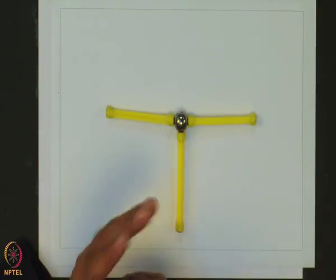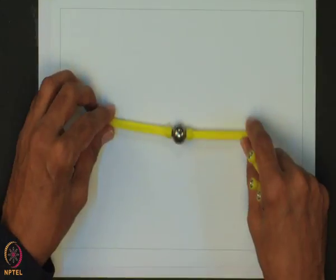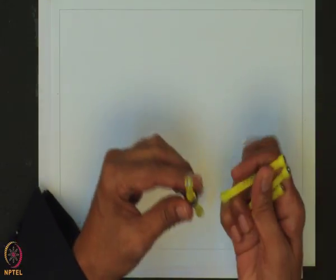Steric number 5 with 3 lone pairs and 2 bonded pairs gives a linear shape, examples being XeF₂, I₃⁻, and IF₂⁻. The 3 lone pairs occupy equatorial positions in the trigonal bipyramidal geometry and the 2 bonded pairs are axial, giving a linear shape. VSEPR theory comfortably explains the geometries and shapes of most main group element compounds.